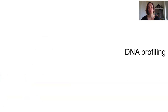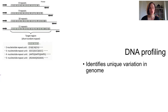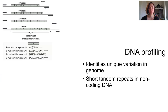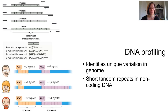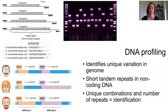DNA sequencing opened the door to DNA profiling, which identifies unique natural variations within an individual's genome. It relies on short tandem repeats — sections of non-coding DNA that have many repeats, like AGAGAGAG over and over. Each individual has a unique combination of two alleles and a unique number of repeats, so this acts as a form of identification. It can be visualized using gel electrophoresis and compared to a reference profile.